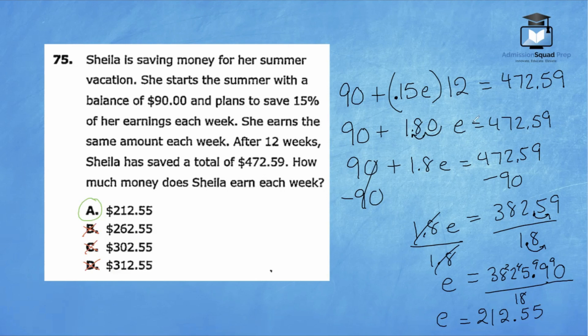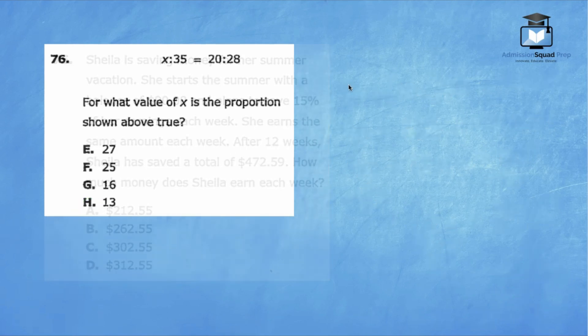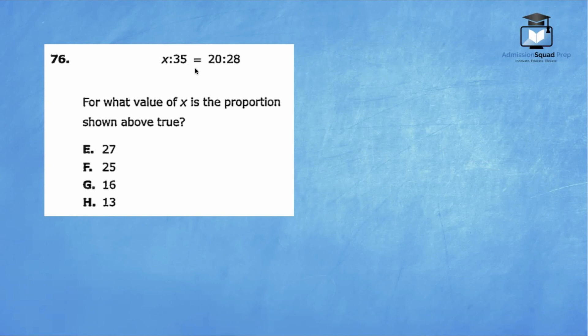Let's check out question number 76. For what value of X is the proportion shown above true? I know it may look a little different, but these are two equivalent ratios. And remember, the formal definition of a proportion are two equivalent ratios. So we have X over 35 equals 20 over 28.